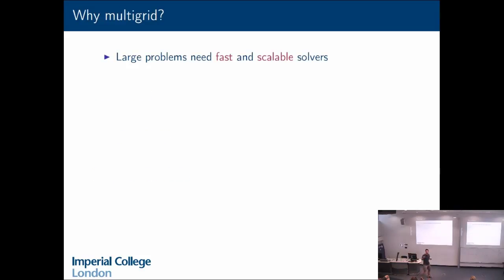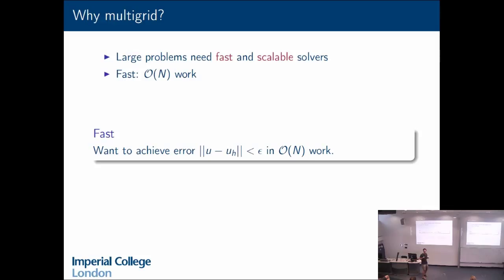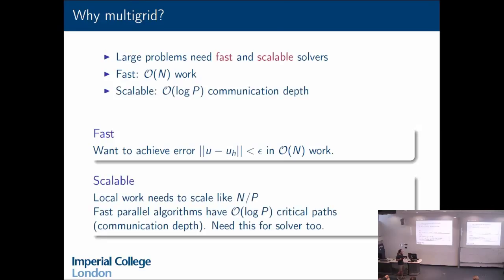So, why do we care about multigrid at all — sort of multi-level methods in general, as Stefano just presented? Large problems need fast and scalable solvers. If you're doing small problems, you can use direct solvers and it's all fine and you're really robust, but as soon as you switch to a really large problem, suddenly you don't get an answer in a reasonable amount of time. By 'fast' I mean achieving an error between my discrete solution and the real solution less than some tolerance in order-n work, where n is the number of degrees of freedom. By 'scalable' I mean not doing lots of communication — fast parallel algorithms have order log(number of processes) communication depth, and so our solver really wants to have this as well. Multi-level methods do offer this if you get them right.